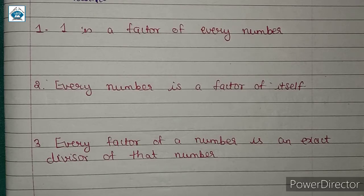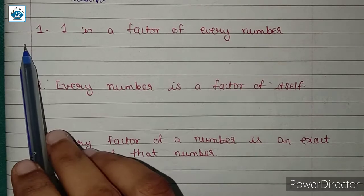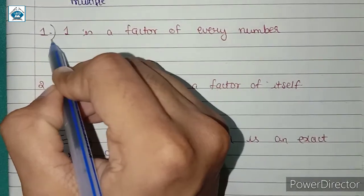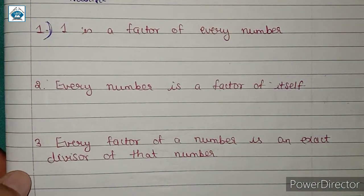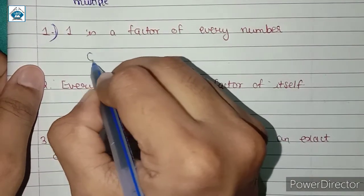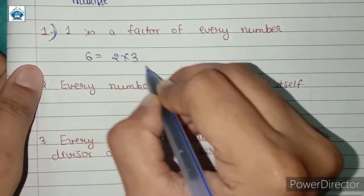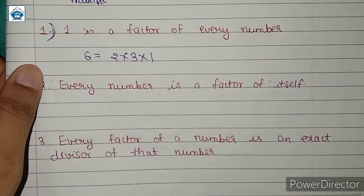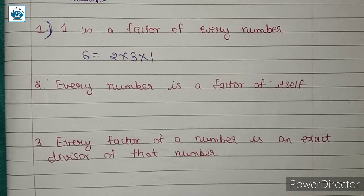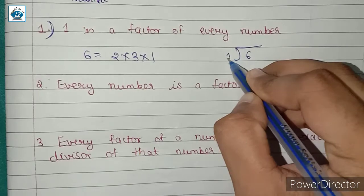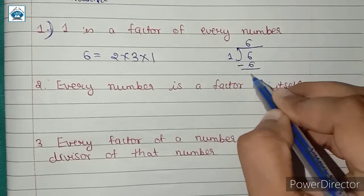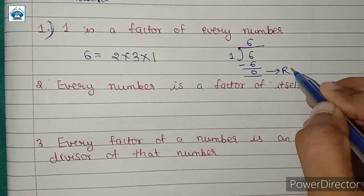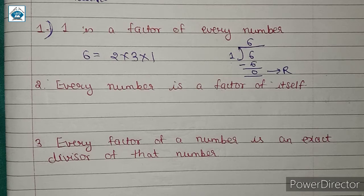We have the following conclusions. First: 1 is a factor of every number. We know that 1 is the multiplicative identity, so when we divide any number, say 6, by 1 — since 1 multiplied by 6 equals 6 — we get remainder 0. Therefore 1 is completely divisible into any number.